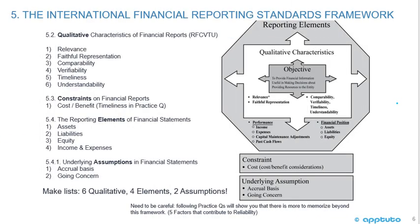Now we're going to look at the International Financial Reporting Standards Framework. We start in the center with the objective — to provide financial information useful in making decisions about providing resources to the entity. Moving out, we hit the qualitative characteristics: relevance, faithful representation, comparability, verifiability, timeliness, and understandability. Those are six qualitative characteristics, and I've made a little mnemonic — RFCVTU.